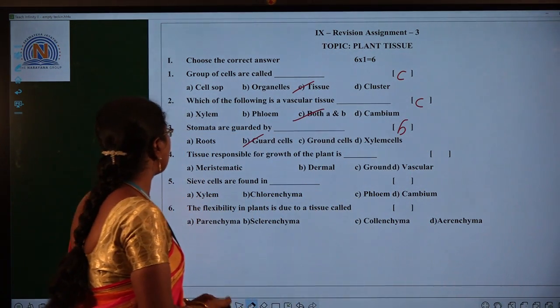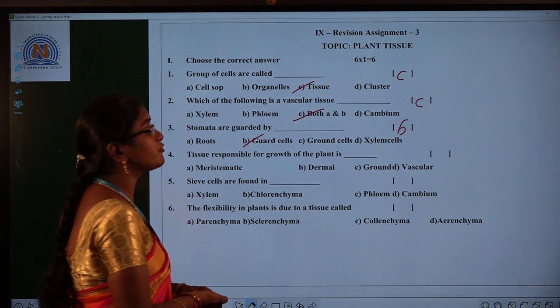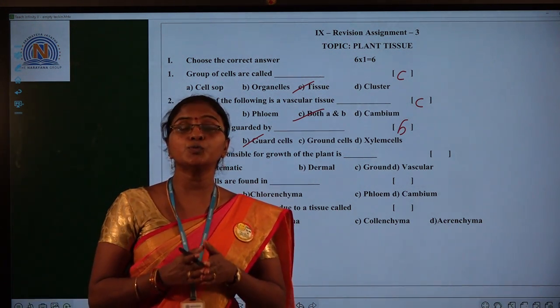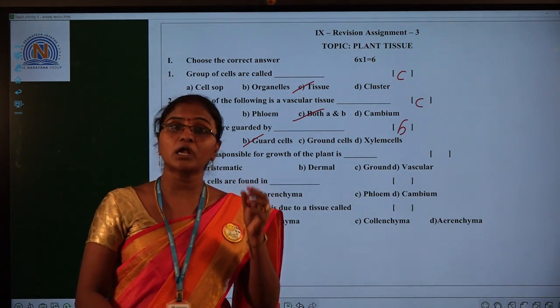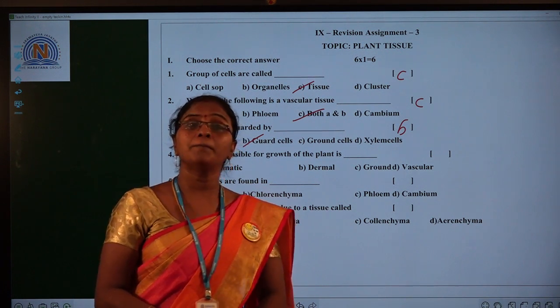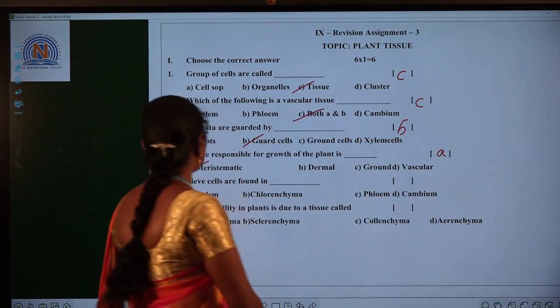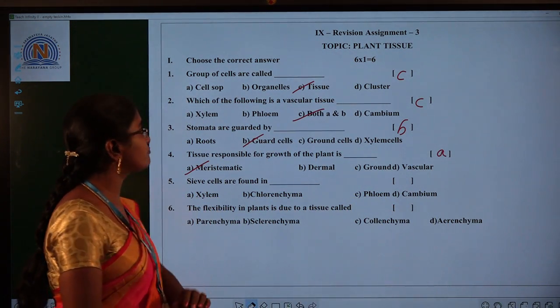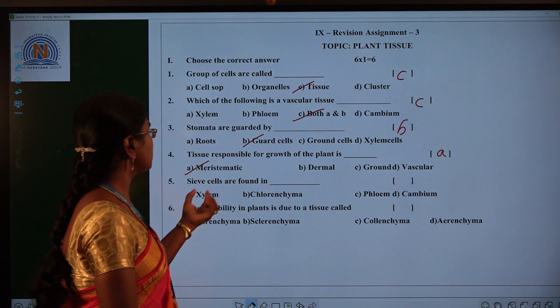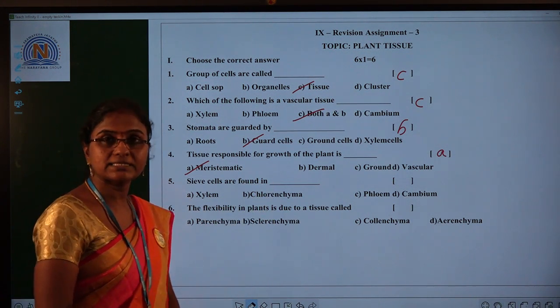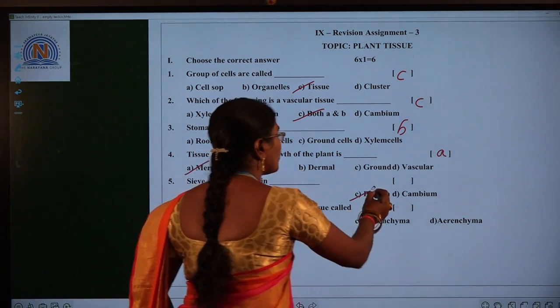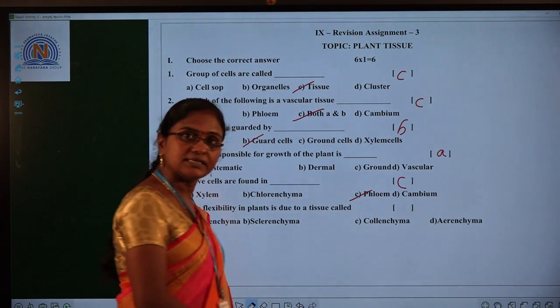And the fourth one, tissue responsible for growth of the plant. So the tissue which is responsible for the overall growth of the plant, that is the meristematic tissue. Option A. And the fifth one, sieve cells are found in given tissue. Which tissue contains the sieve cells? That is the phloem tissue. Option C.